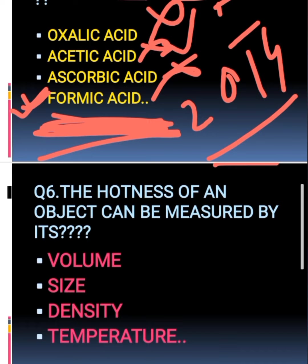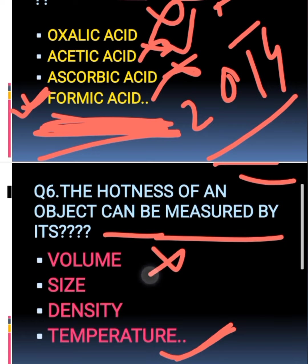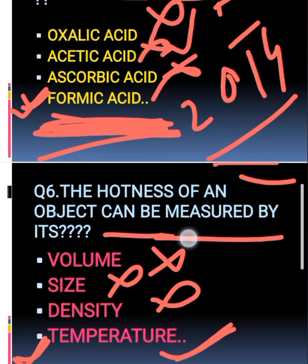The sixth question: the hotness of an object can be measured by what? The instrument used to measure hotness and coldness — volume doesn't work, size doesn't work, density doesn't work. The correct answer is temperature.